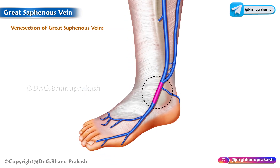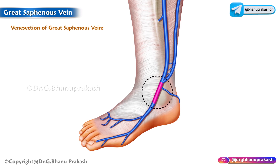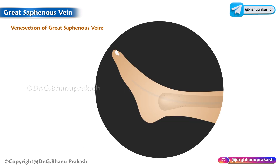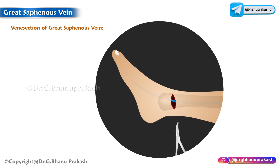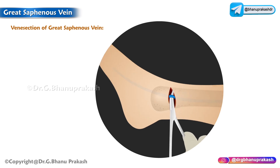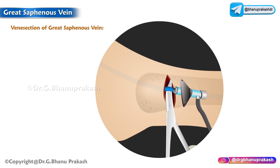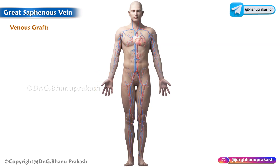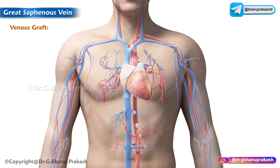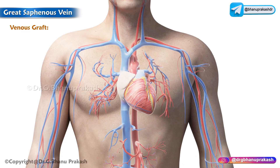Let us talk about the clinical importance. The first is venisection of the great saphenous vein. The great saphenous vein in front of the medial malleolus at the ankle is the most preferred site for venisection in emergency conditions where superficial veins elsewhere in the body are collapsed and invisible, especially to insert a cannula for prolonged administration of intravenous fluids.